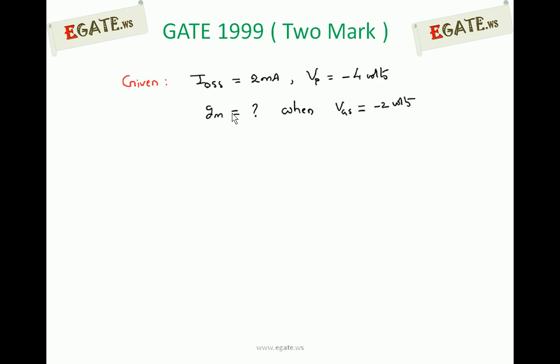Given n-channel JFET, drain-to-source saturation current IDSS is given as 2 mA and pinch-off voltage is given as minus 4 volts. We need to calculate transconductance of n-channel JFET when gate-to-source voltage VGS is equal to minus 2 volts.